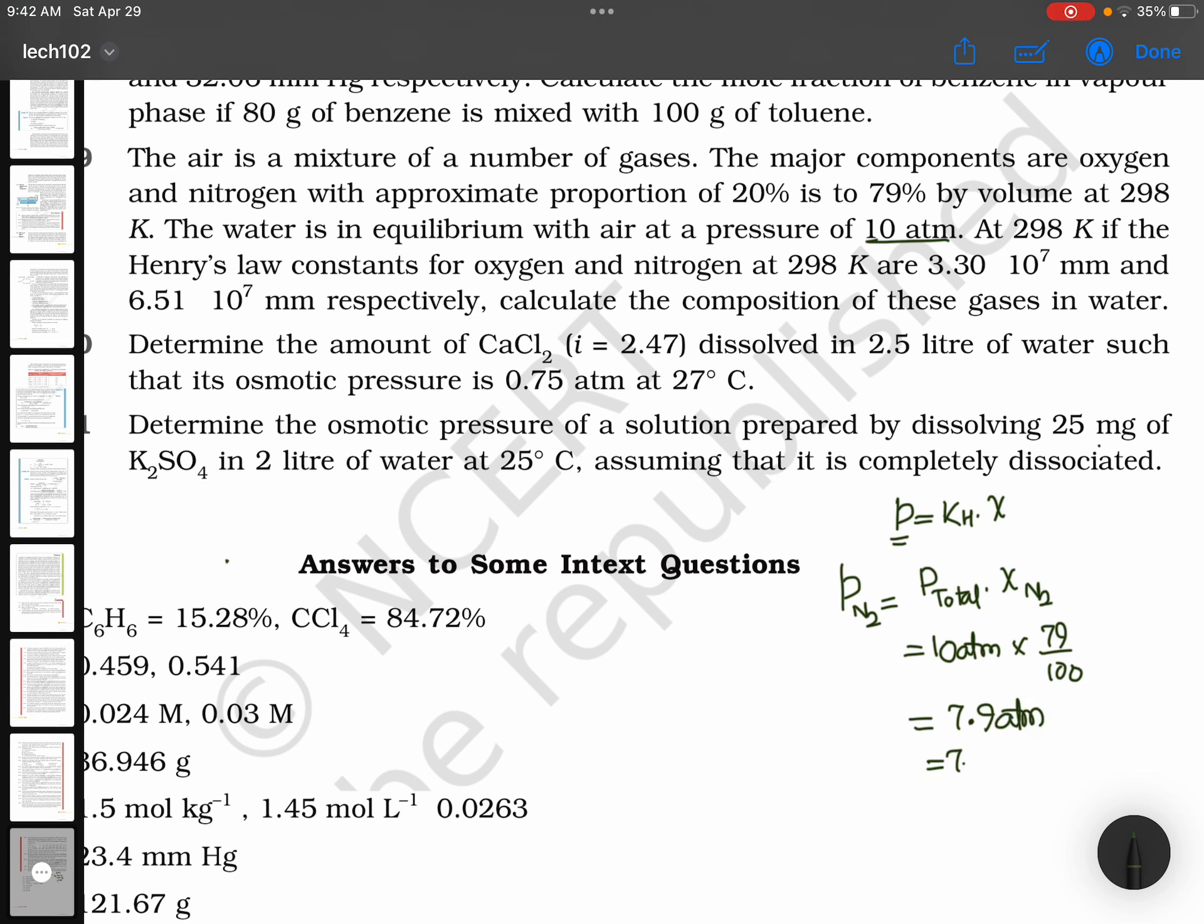That's 7.9 times 760 millimeters per atmosphere, which equals about 6,004. This is the partial pressure of nitrogen.